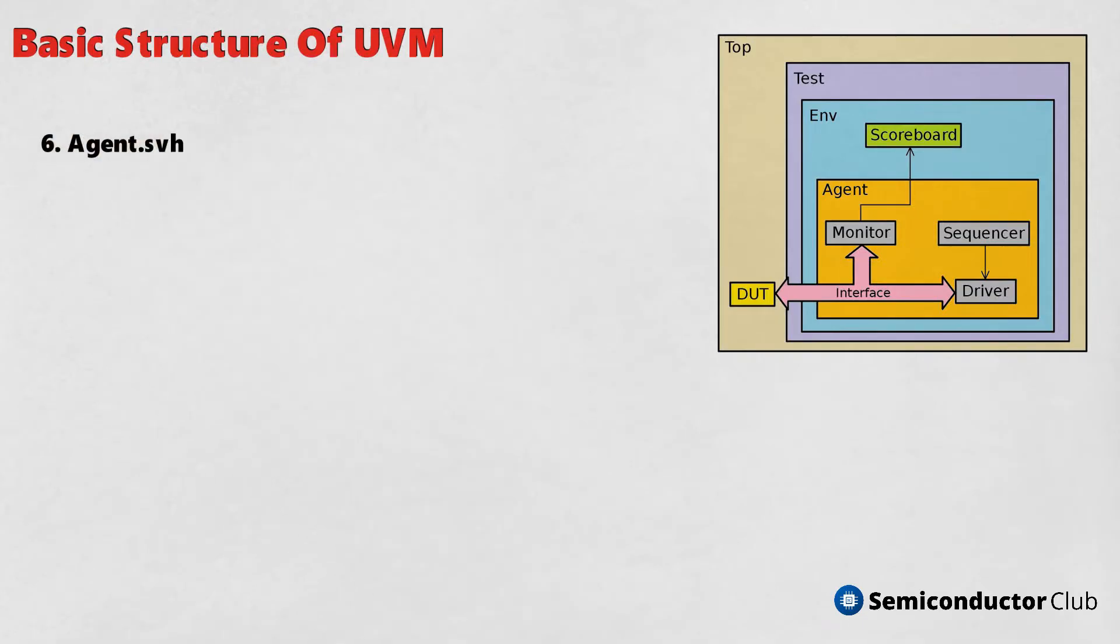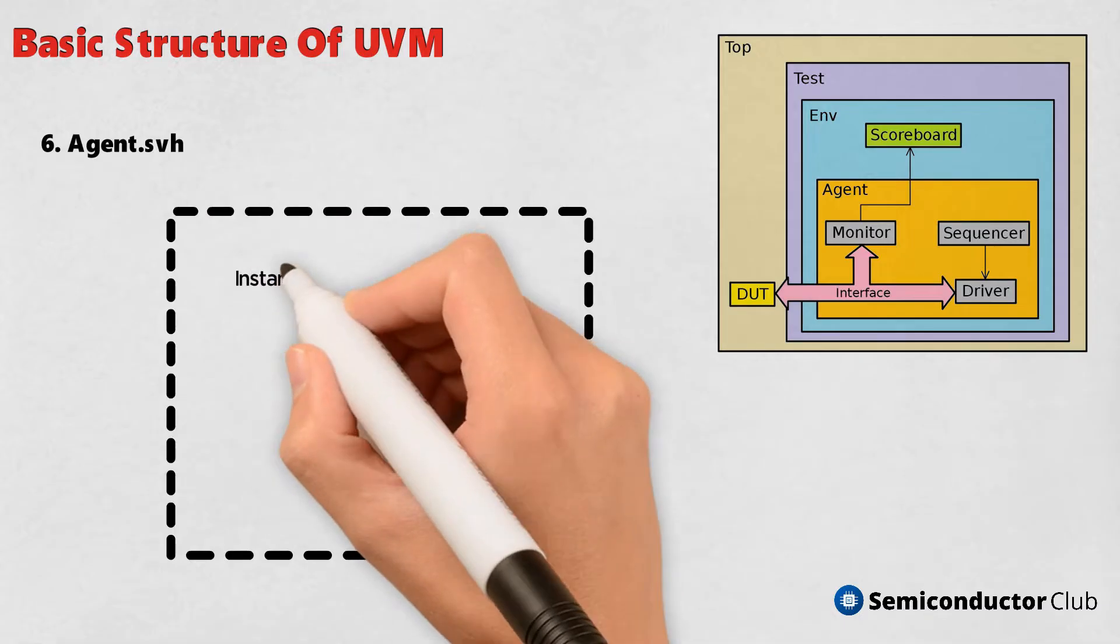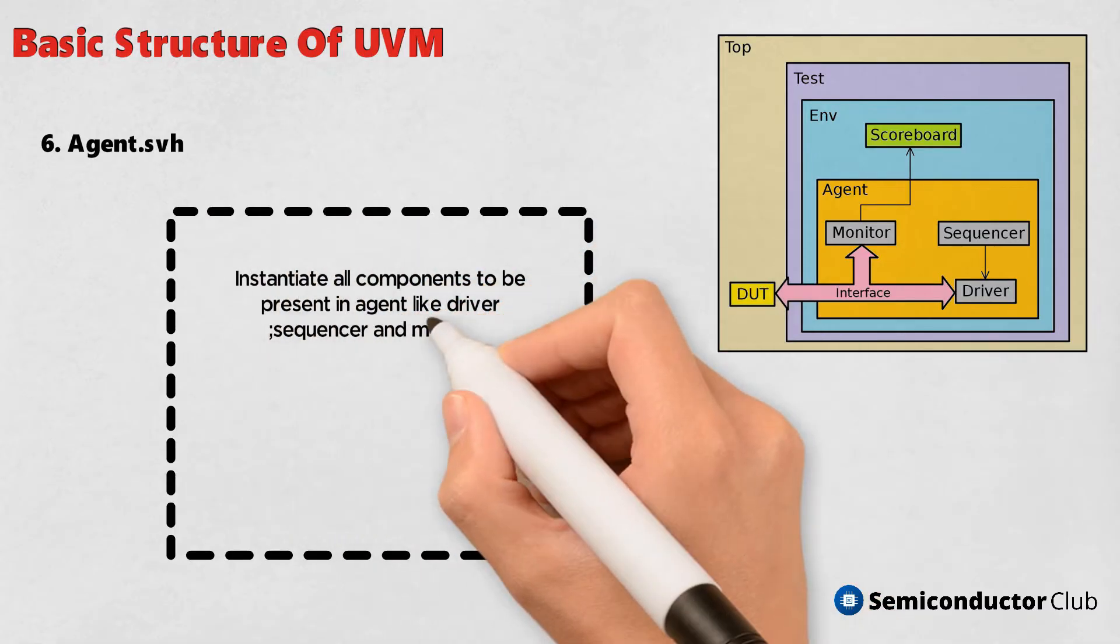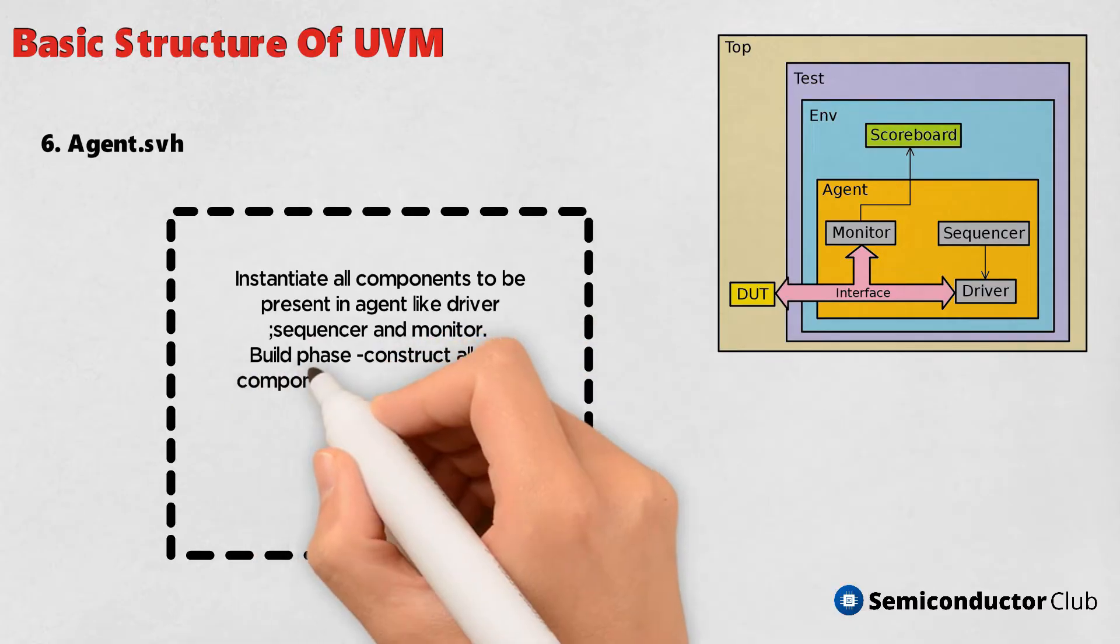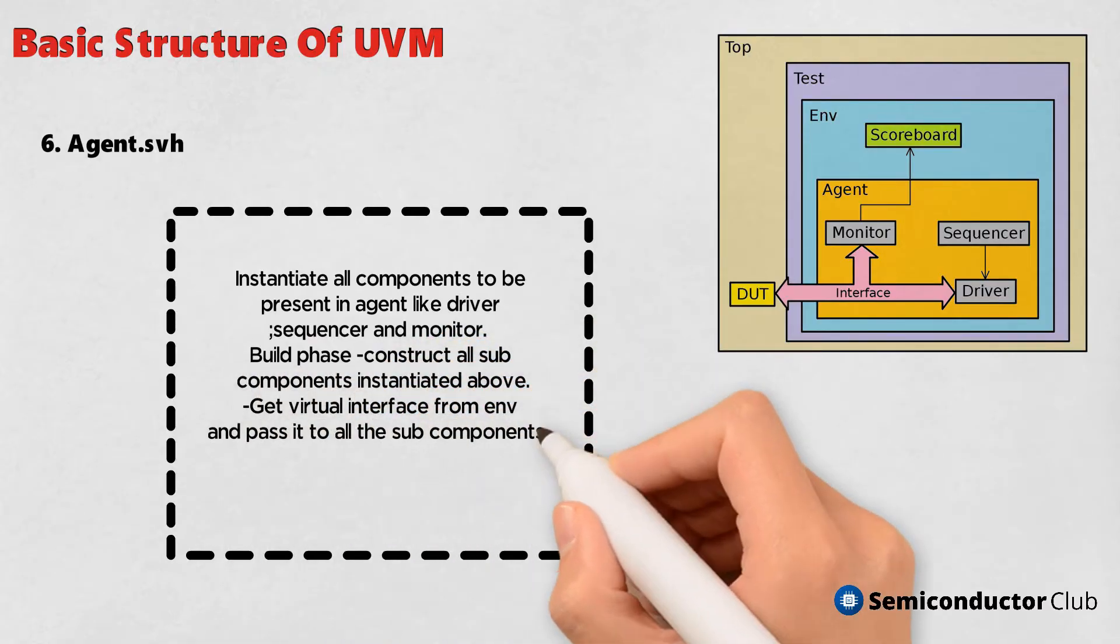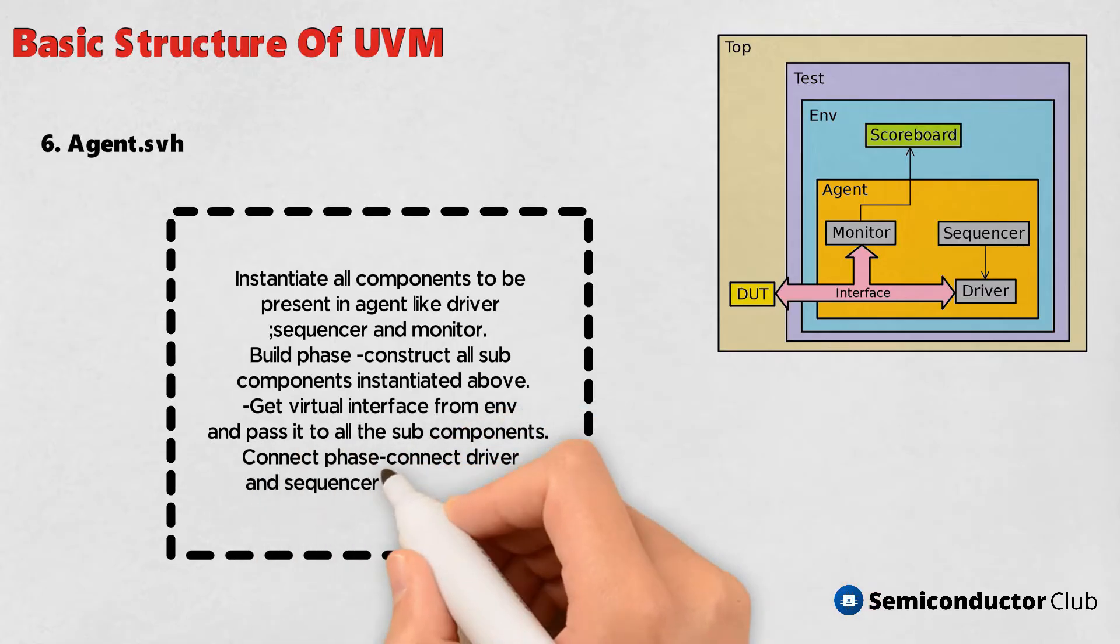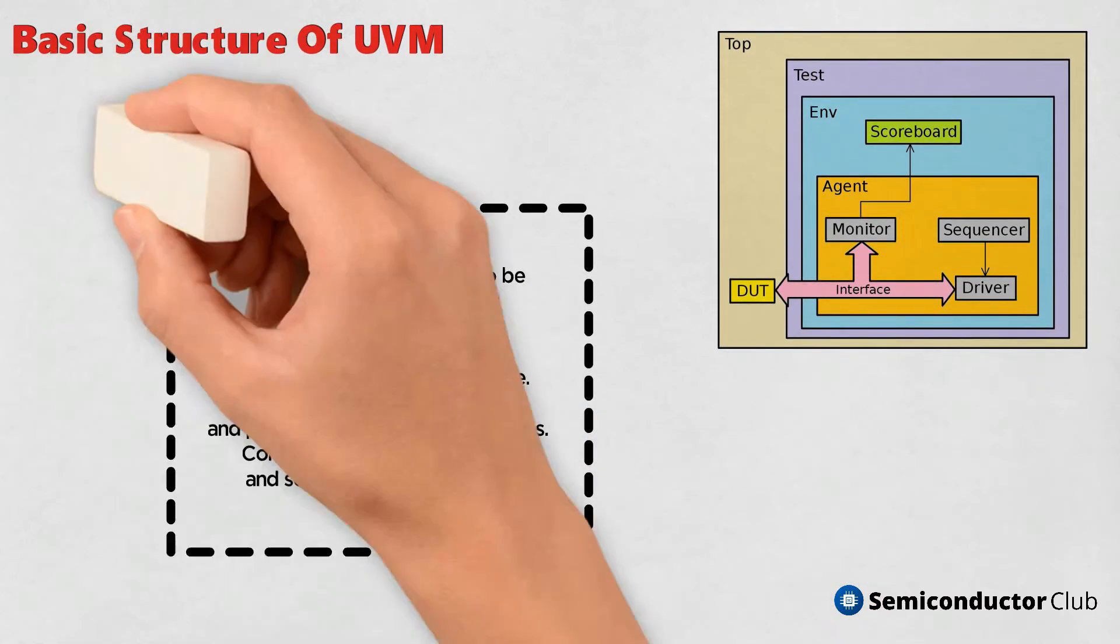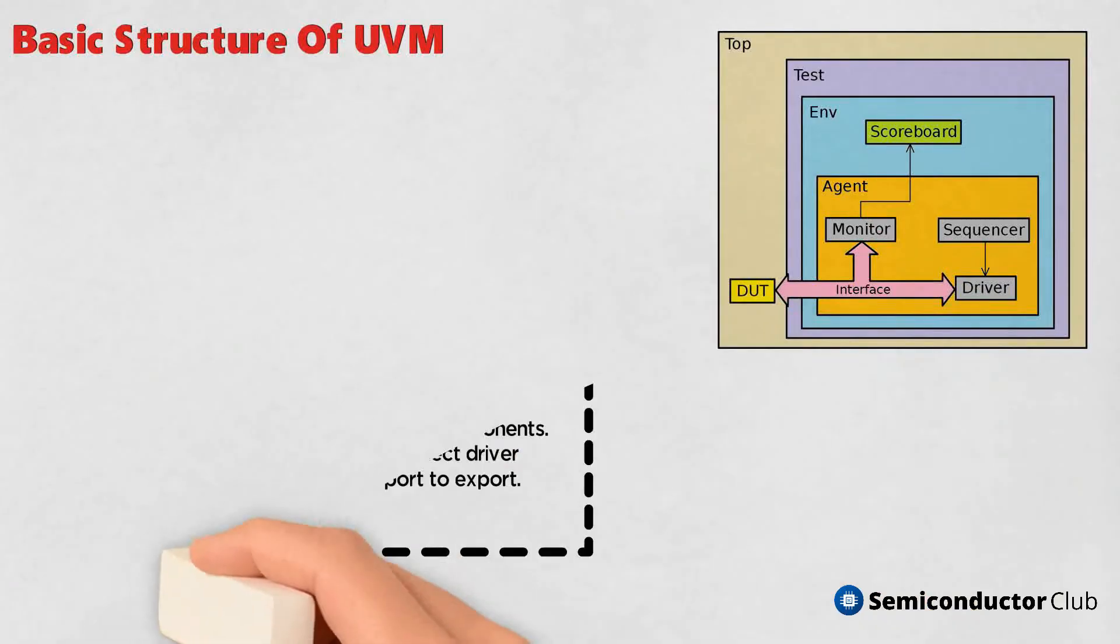6. Agent.svh - Instantiate all components to be present in agent like driver, sequencer, and monitor. Build phase: construct all subcomponents instantiated above. Get virtual interface from env and pass it to all the subcomponents. Connect phase: connect driver and sequencer port to export.